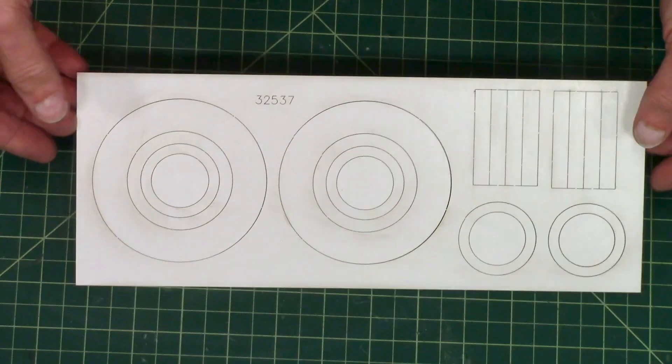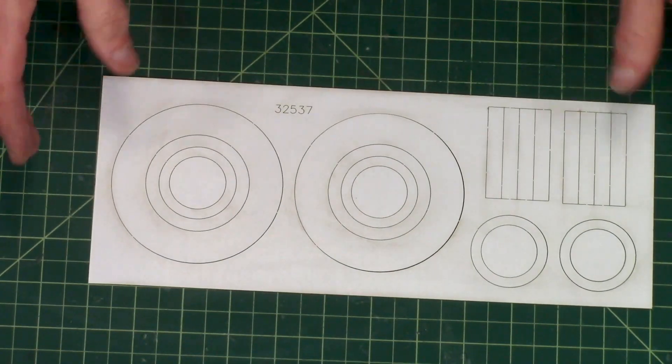This is the start of building the engine mount and we're going to start by grabbing this laser cut sheet from the parts bin.